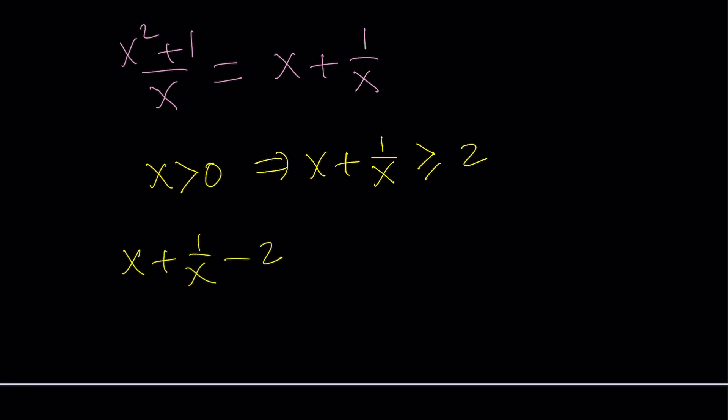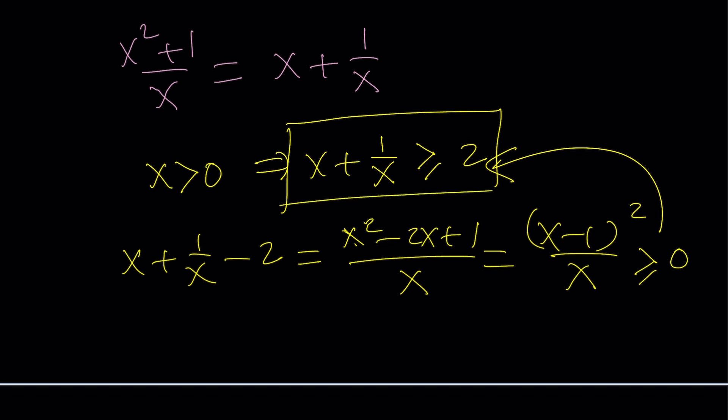And if I make a common denominator, I'm going to be getting (x² - 2x + 1)/x and notice that x is positive and the numerator is (x - 1)² which is also positive or at least non-negative, right? It can be zero of course. So this needs to be greater than or equal to zero but that just implies the inequality that I just gave you. So for positive x values, this is true.